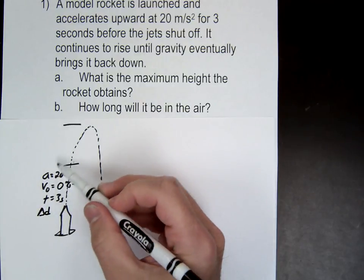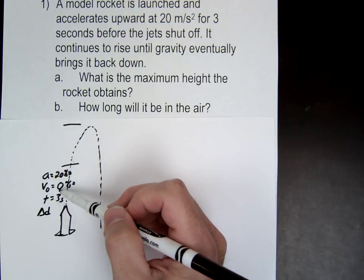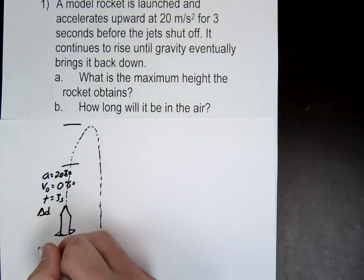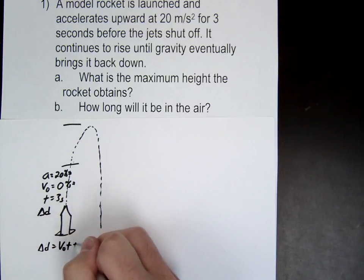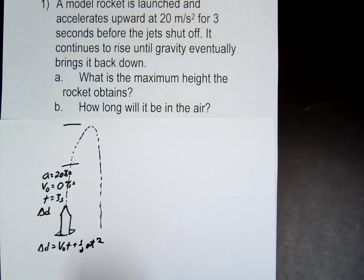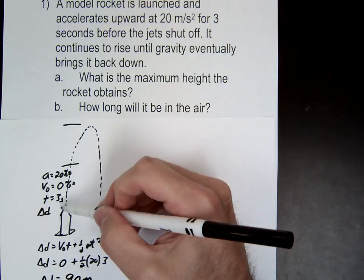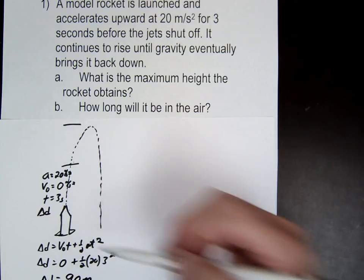Delta D, right? So we'll use, which one are we going to use here? Delta D equals V naught T plus 1 half AT squared. I guess since this is a video I better do it. VOT 1 half AT squared. Okay? So set that up like that. Delta D equals 0 plus 1 half AT squared. You're not using gravity here. You're using 20 times 3 squared. And what are you getting for D here? 90, 90. So that's from here to here, right? That's 90 meters from here to here.